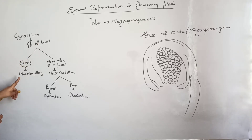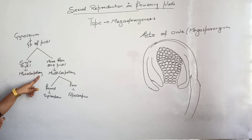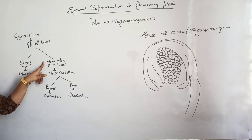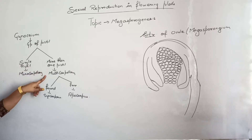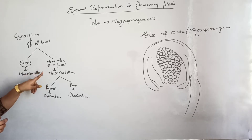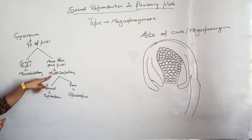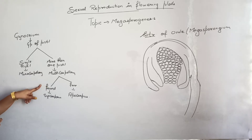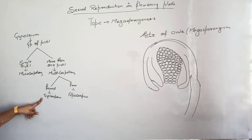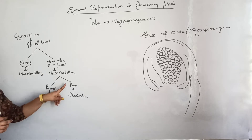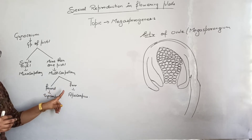In a flower, if only one pistil is present, that condition is called monocarpillary condition. If more than one pistil is present, it is called multicarpillary condition. In the multicarpillary condition, if the pistils or ovaries are fused, it is called syncarpous condition.